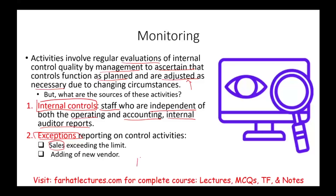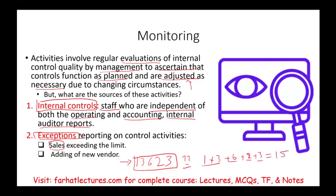Let's think about the following example. Assume we are looking at the number 1, 3, 6, 2, 3 — this is the number we assign to new vendors. If you add 1 plus 3 plus 6 plus 2 plus 3, it totals 15. Our purchasing people don't know that the system only generates account numbers whose digits add to 15. We don't tell them this, because if we did, they might add a fake vendor and make sure the digits add to 15. These are exception report techniques that alert us when someone tries to add a vendor that is not in compliance.